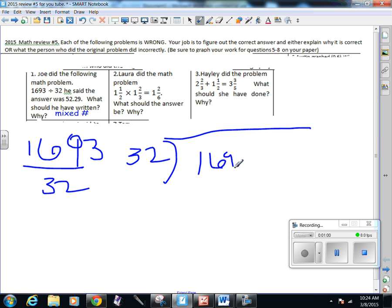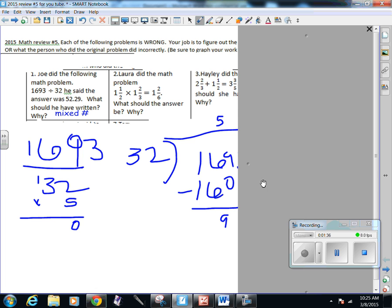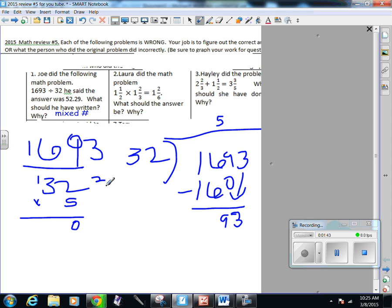So 32 does not divide into one, so I can either put an X or 0 or just move on to the next one. And then I ask myself, how many thirty-twos are in 16? Well there are none. How many thirty-twos are in 169? So 5. And 32 times 5, 2 times 5 is 10, carry the 1, 15 plus one more, that's 160. So I'm gonna put my 160 here, I'm gonna subtract, gonna get a 9.